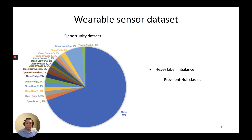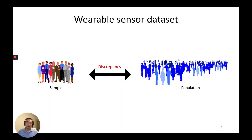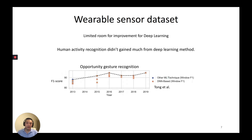They are heavily label-imbalanced: Opportunity datasets have over 70% of samples as null classes. Activity classes have not expanded much from the past. We are living in 2020 but still using benchmark dataset Palma 2 from 2012, and the activity classes in Palma 2 have not changed much from 2004. Those limitations create a huge discrepancy between collected samples and the population in the wild, making limited room for improvements for deep learning. Human Activity Recognition didn't gain much from deep learning — F1 score only had minor improvements on Opportunity datasets over the past seven years in the deep learning era.